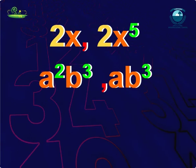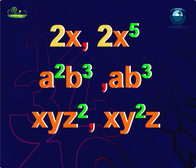Let's see some more examples: 2x and 2x to the power 5, a square b cube and ab cube, xyz square and xy square z. In all the examples, variable parts are not similar or their exponents are not similar.